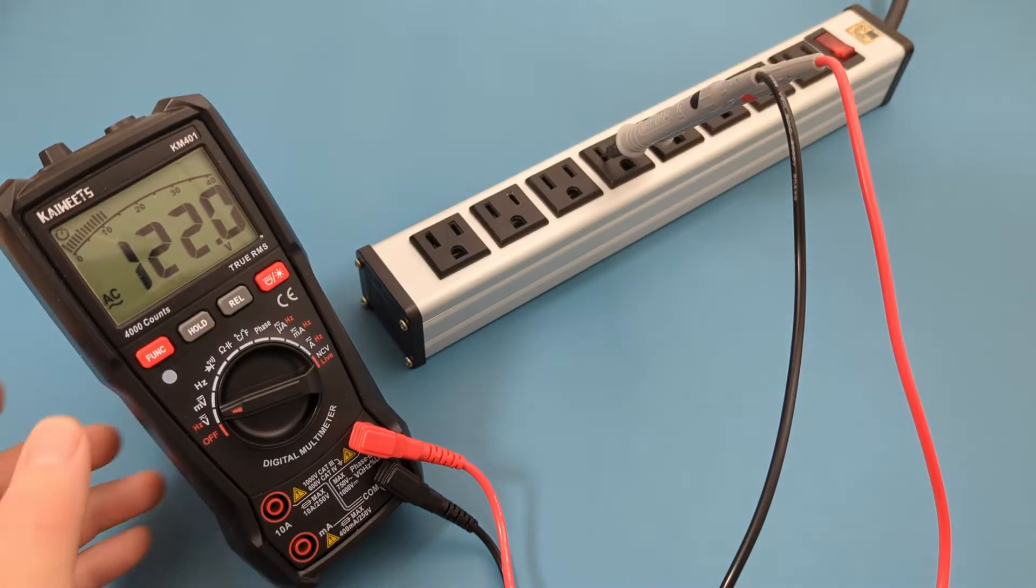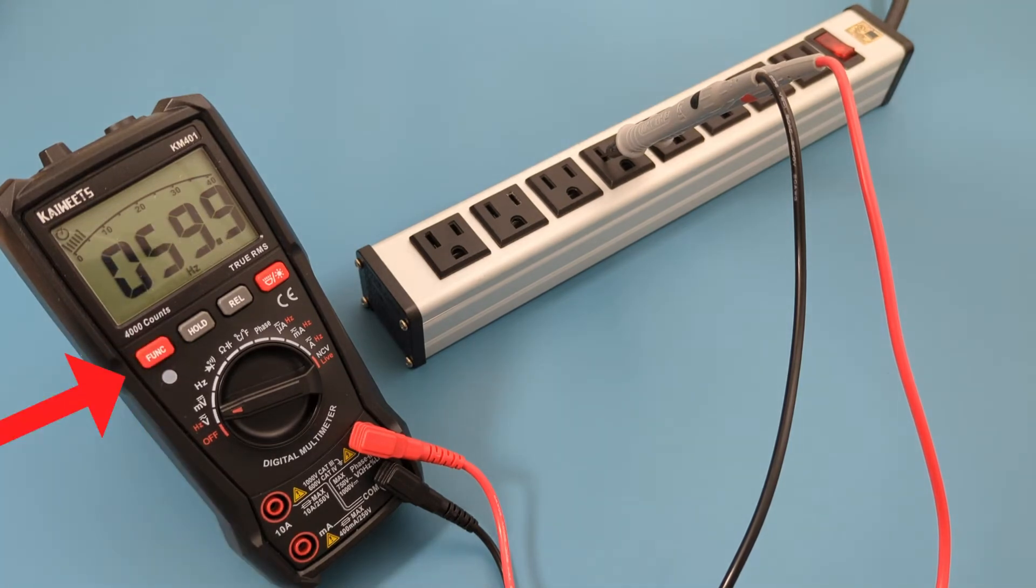Press the red function button again to toggle from AC to Hertz. As expected, the reading shows around 60 Hertz. This is a good sign.